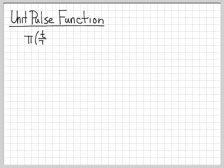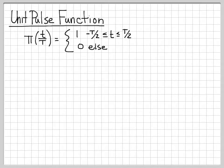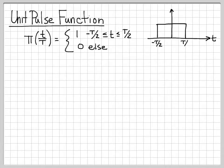What about the unit pulse function? The unit pulse function uses the notation π(t/T). This is a function that's equal to 0 everywhere except within the time between −T/2 to T/2. If we plotted this function, over the time interval between −T/2 to T/2 it is equal to 1, and for all other times it is equal to 0.